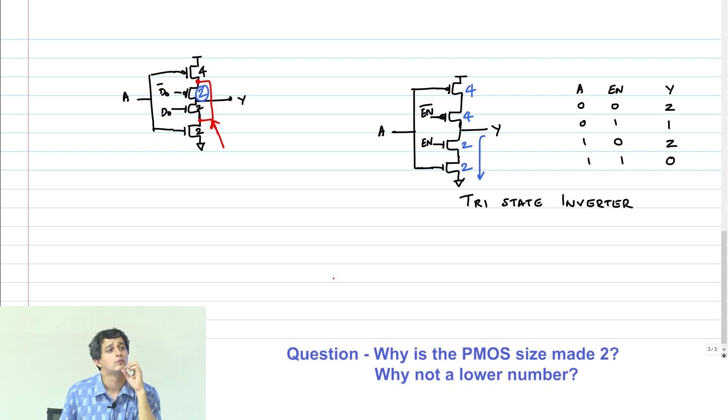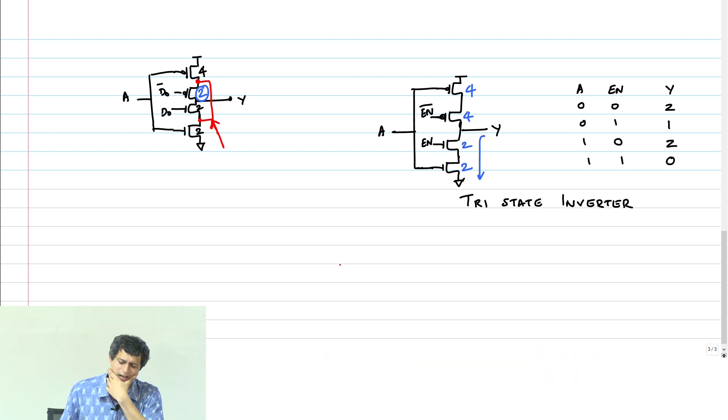This is not some derivation where I can show that this is minimum. It is in practice that you typically do this, that is all. It is a reasonable thing. You have to figure out from simulation if maybe 1, 2 is also okay. But you have to figure out from simulation, that is all I am saying.